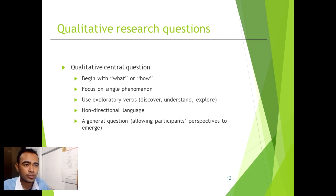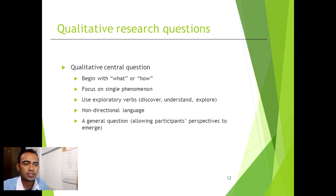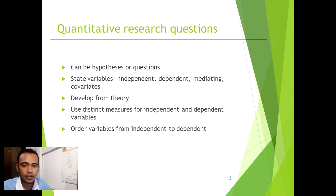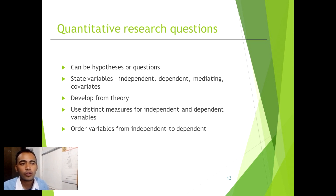For qualitative research questions: they always begin with 'what' or 'how,' focus on a single phenomenon, use exploratory verbs like discover, understand, and explore, and use non-directional language. They allow a general question letting participant perspectives emerge. For quantitative research questions: they can be hypotheses or questions, state variables such as independent, dependent, mediating, or covariates, are developed from theory, use distinct measures for independent and dependent variables, and order variables from independent to dependent.